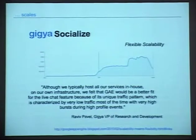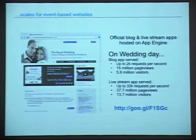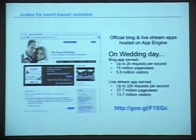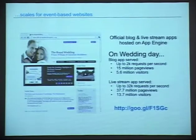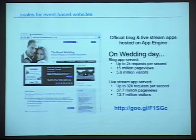And even more extreme: the Royal Wedding. The official blog was hosted as an App Engine app and got 2,000 requests per second on the wedding day. The live stream app, a YouTube app built on App Engine, got up to 32,000 requests per second. When they had the kiss, it jumped another 10,000 — 42,000 requests per second. You can read more about these numbers at the link in the presentation.